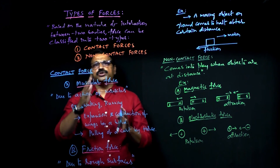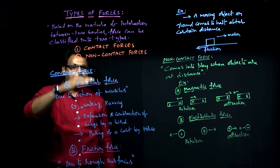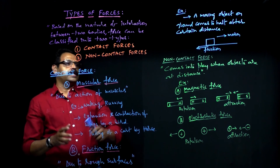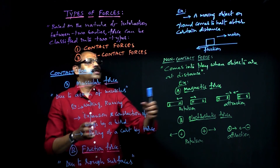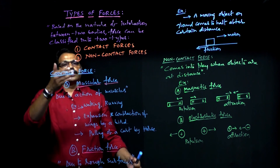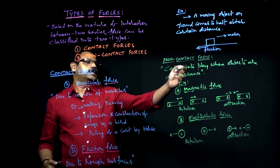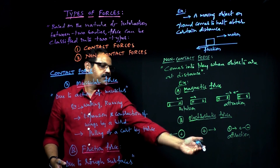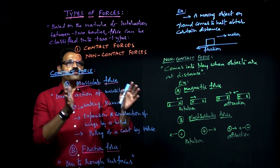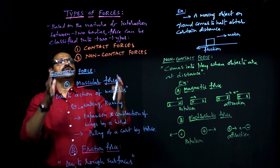In brief, you can classify all the forces into two types: one is contact force, the other one is non-contact force. In the case of contact force, the bodies are in contact with each other. In the case of non-contact force, the bodies are not in touch with each other — they are at a distance — still there exists a force. The examples of contact force are muscular force and frictional force. The examples of non-contact forces are magnetic force and electrostatic force. This is how you can discuss the nature of forces and in how many types force can be categorized — broadly, it is into two types.